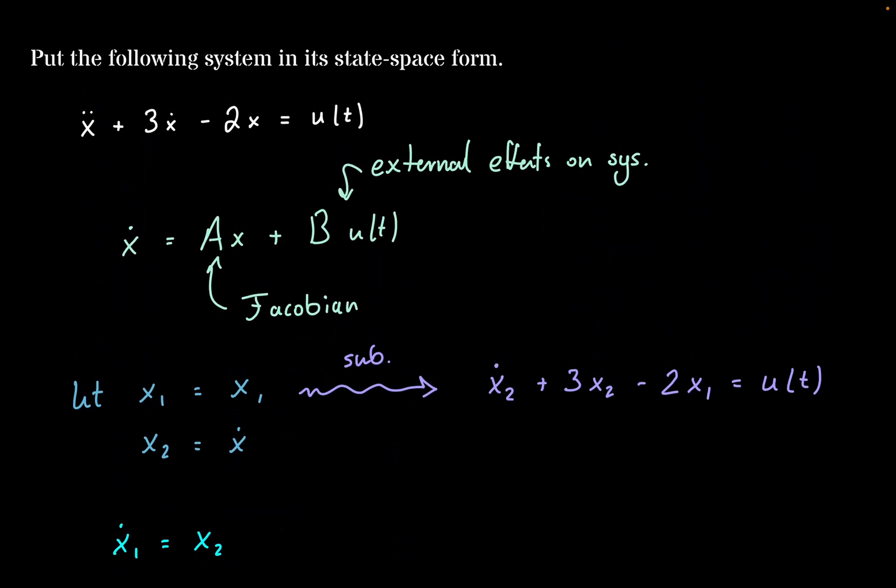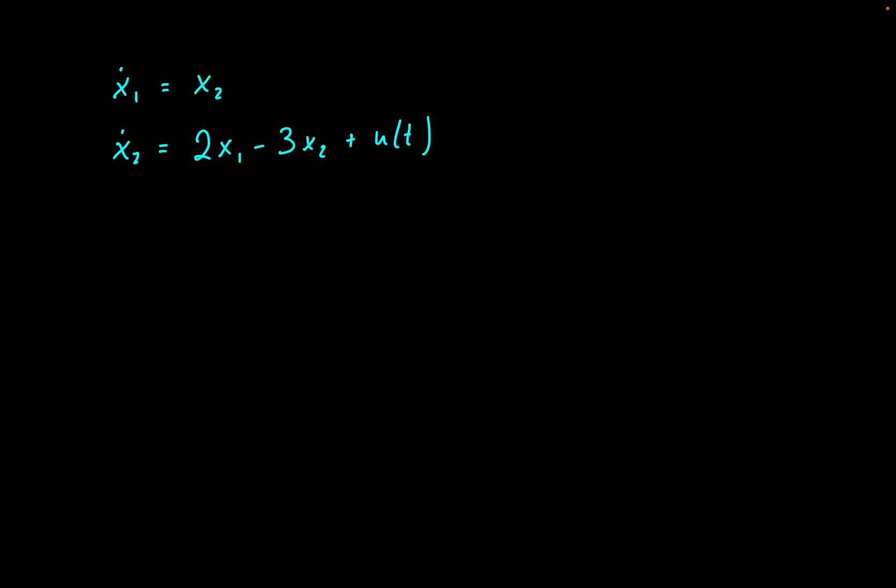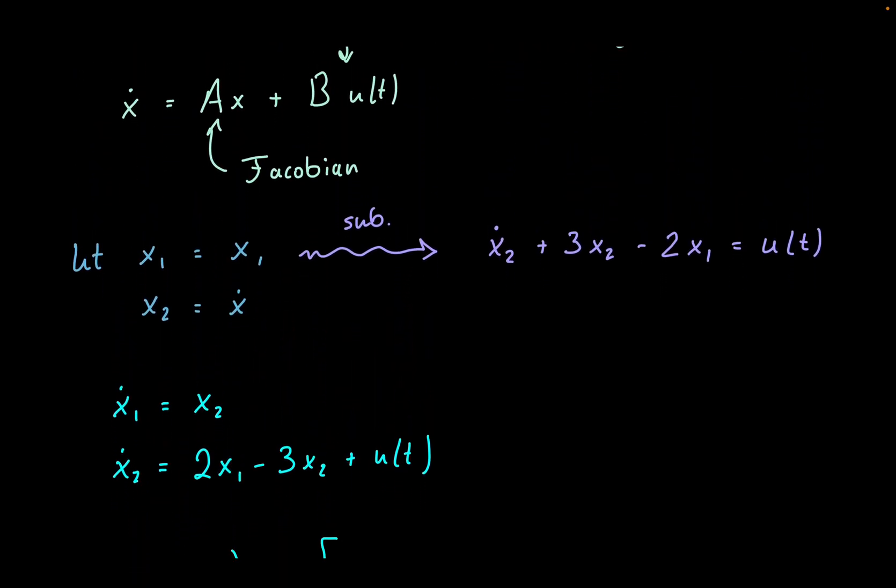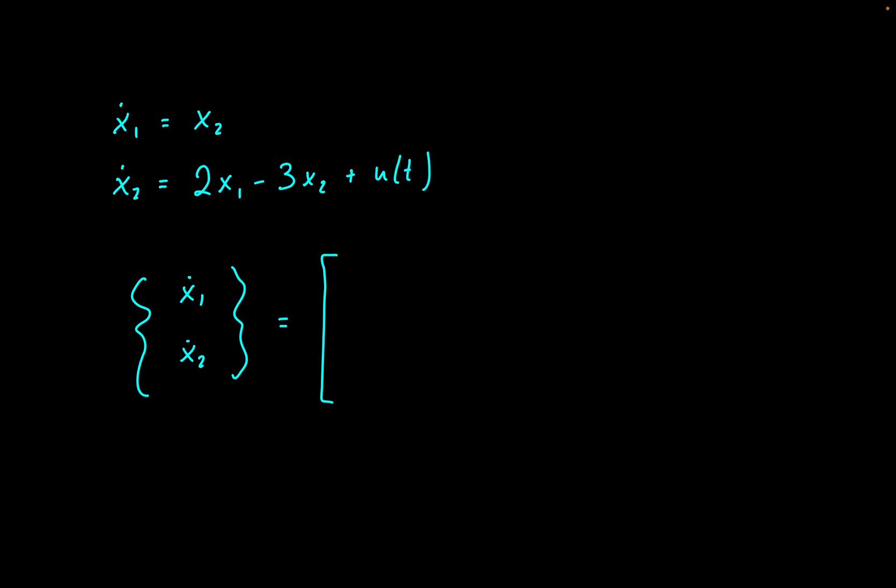So the first part that we had was our x dots, our vector of x dots, right? So we can write this out as x1 dot and x2 dot. And this is going to be equal to our Jacobian matrix, right? Well, with the Jacobian matrix, this is essentially just matrix multiplication. So we can take out our x1s and our x2 from our essentially two equations up here.